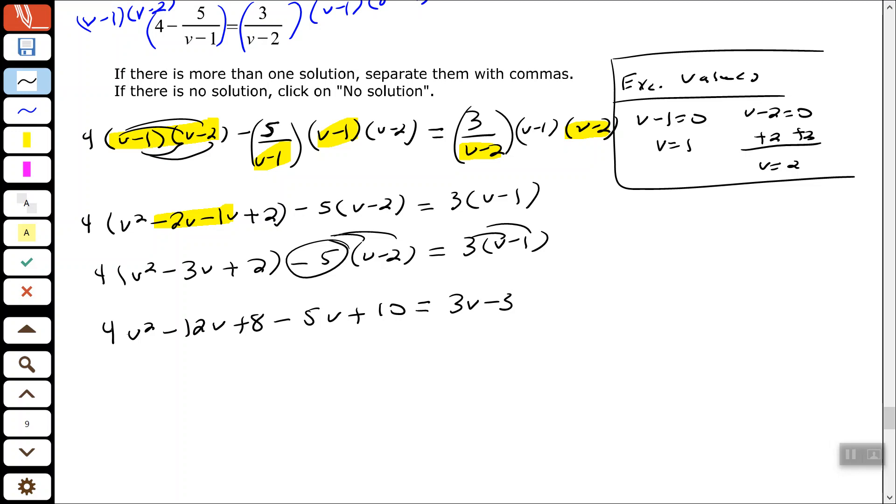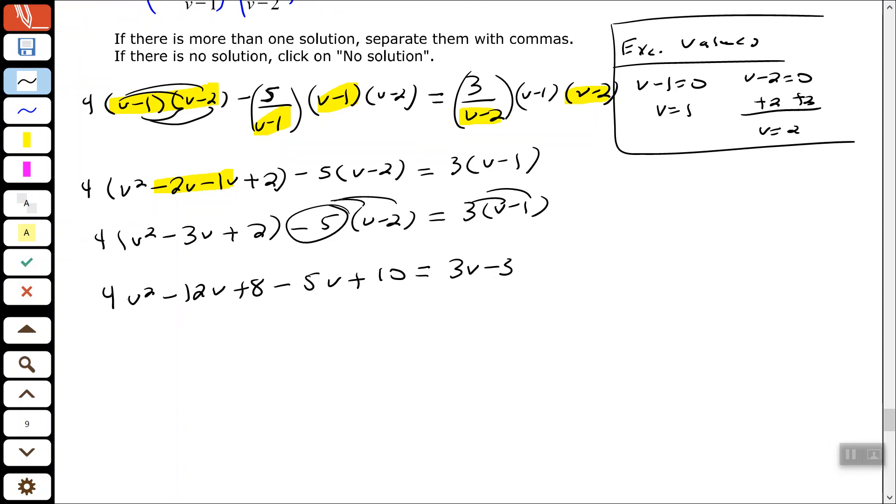Let's see where we are. On the left-hand side, let's combine the like terms that we have. So the negative 12V minus 5V gives us negative 17V. And then the 8 plus 10 gives us positive 18.